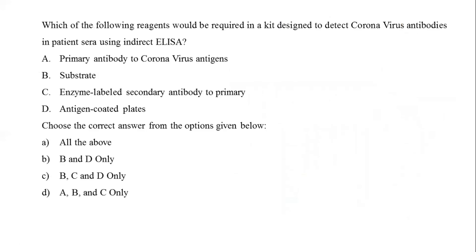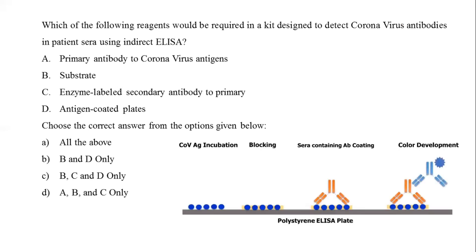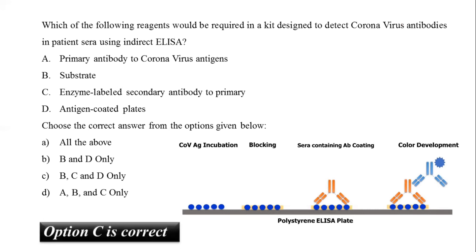The next question: which reagents are required in a kit to detect coronavirus antibodies in patient sera using indirect ELISA? Options include primary antibody to coronavirus antigen, substrate/enzyme label, secondary antibody to the primary, or antigen-coated plates. From the indirect ELISA diagram, along with patient sera, we need antigen-coated plates, enzyme-labeled secondary antibody to the primary antibody, and a substrate for color development. The correct answer is option C: B, C, and D only.